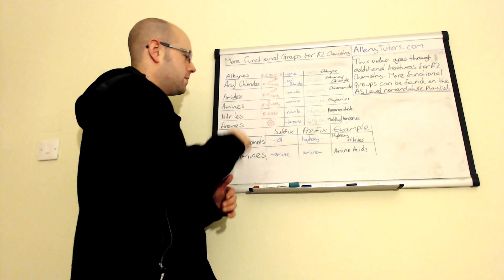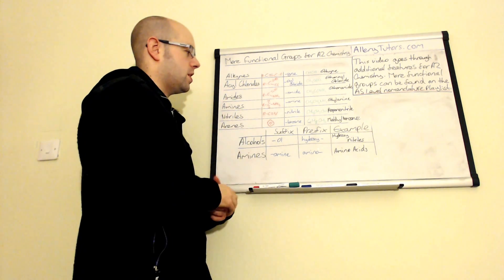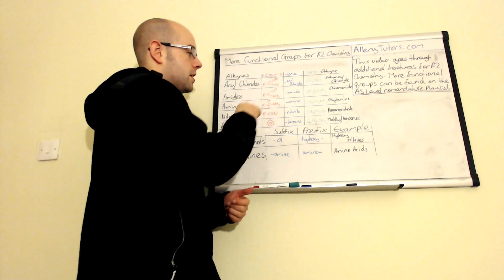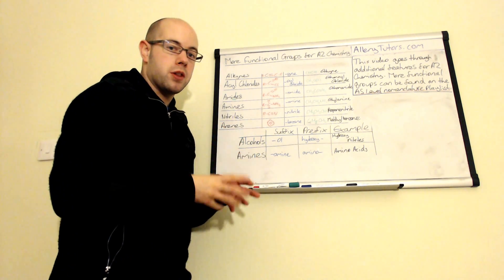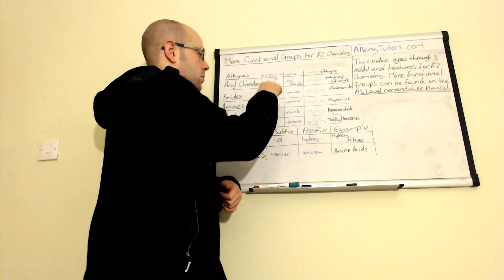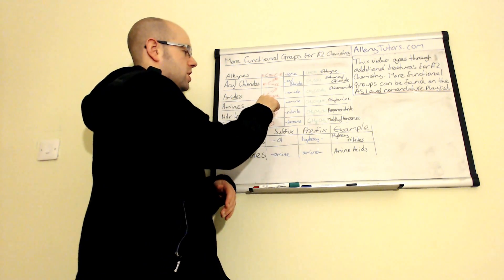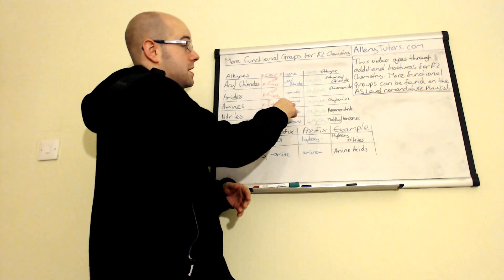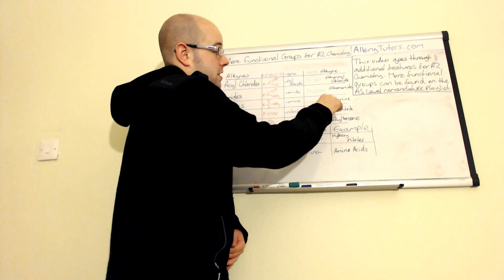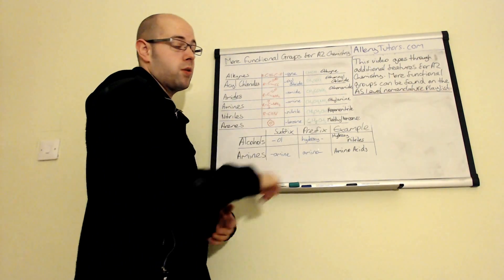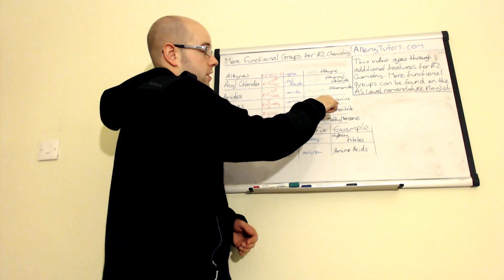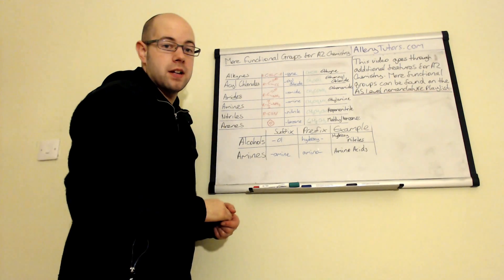The next group is amines — and these are the two I don't want you to get mixed up. Amines still have an NH2 group like amides, except amines have the NH2 group on a carbon with no carbonyl group attached. The C=O is the carbonyl group. So amines just add onto the end of the carbon chain. The ending is 'amine', and you put the core structure first — so with two carbons, that's the 'ethan' bit — giving you ethylamine, not ethanamide.